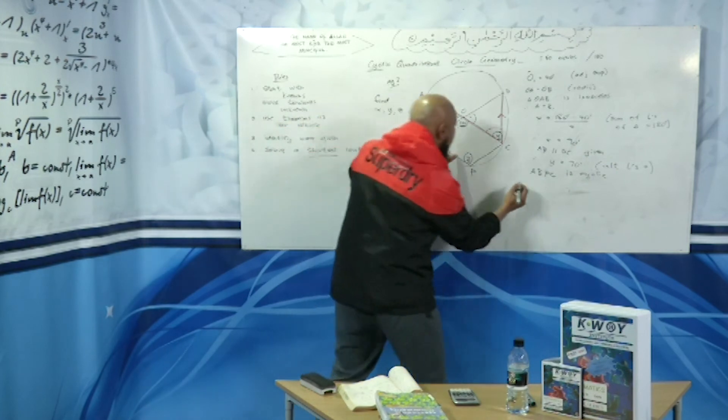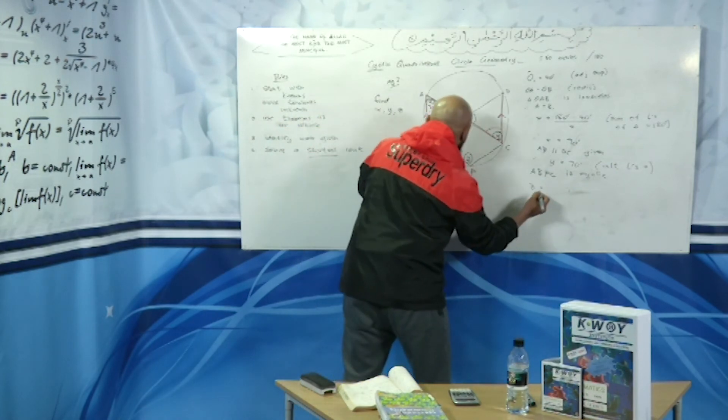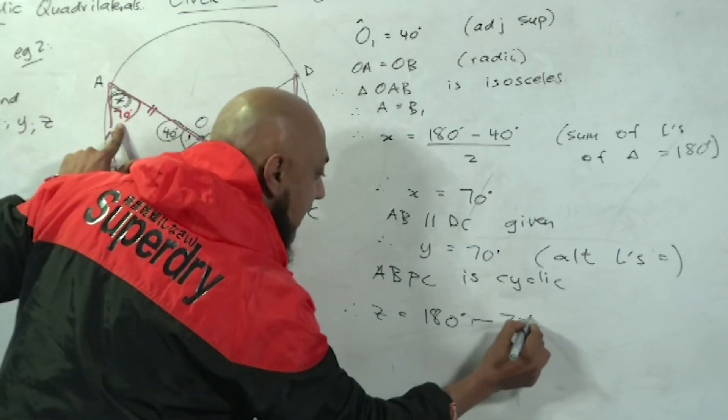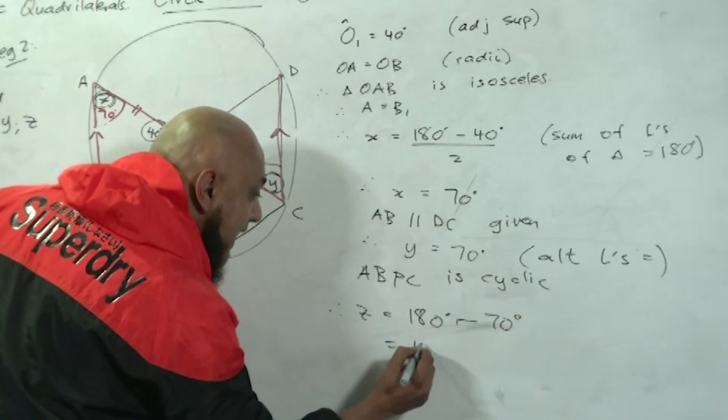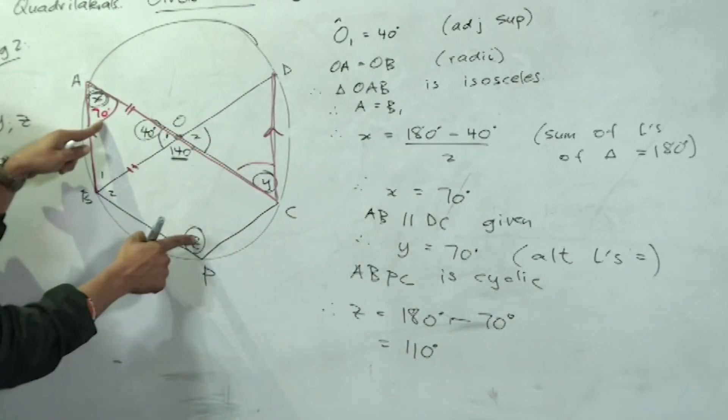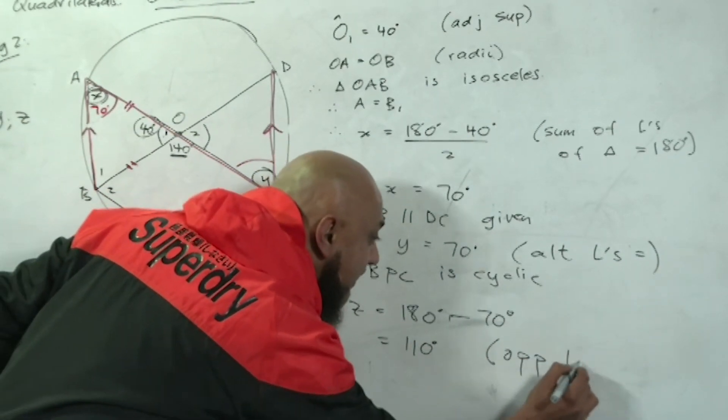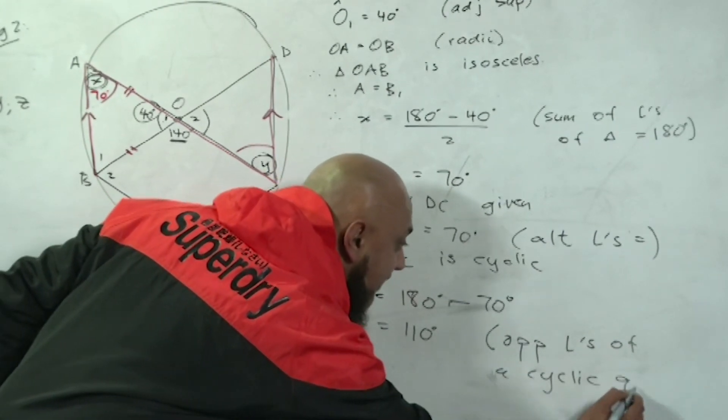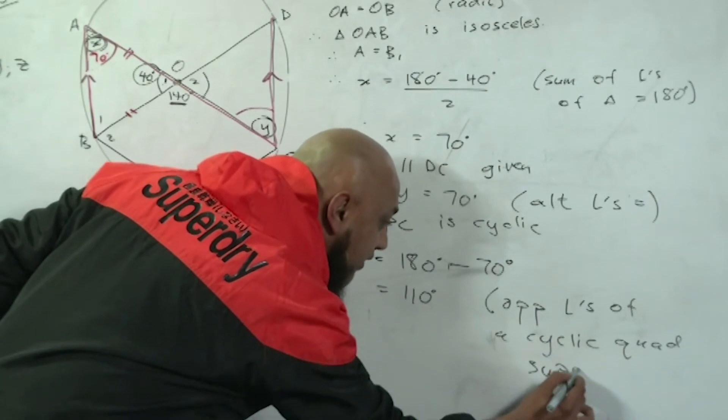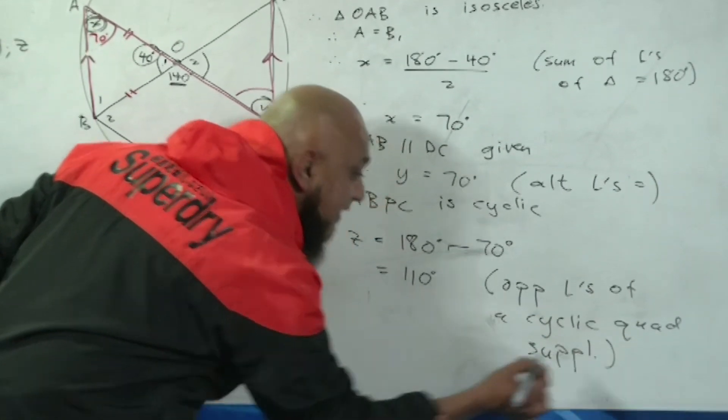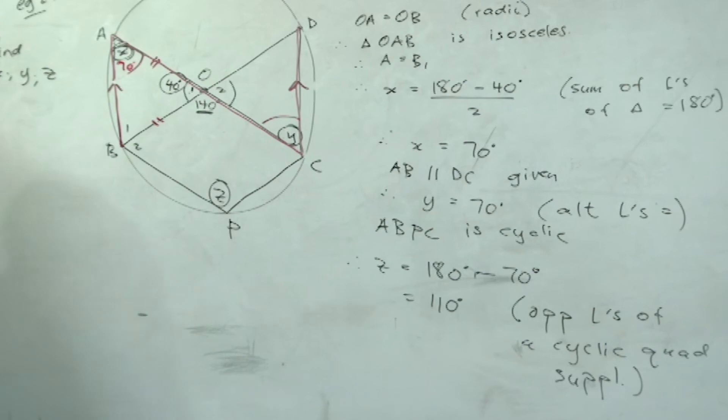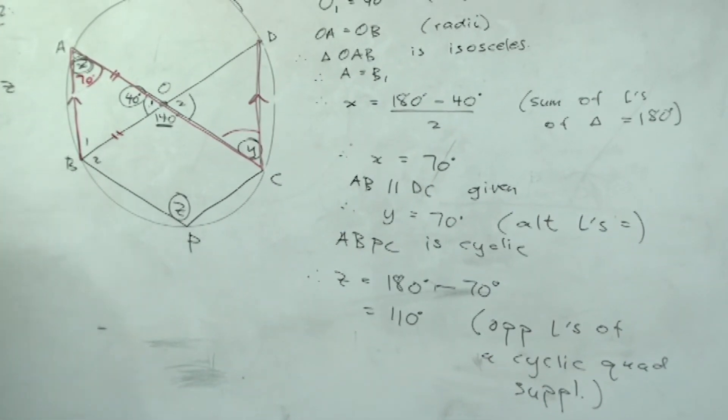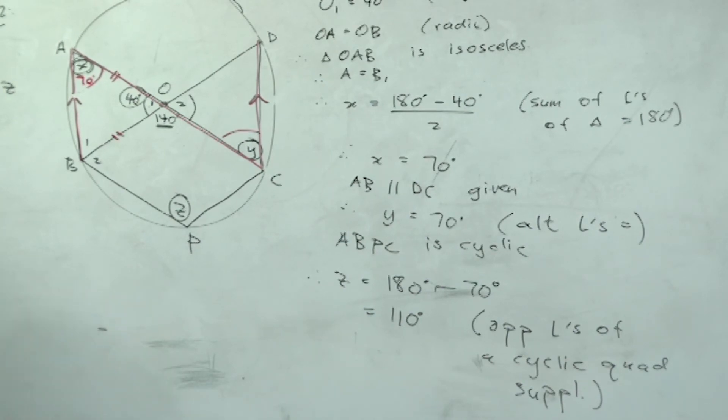Yes, you are right. They are supplementary. Therefore, angle z is equal to 180 minus 70, and 180 minus 70 is 110 degrees. Why did you say that? Because the opposite angles of a cyclic quadrilateral are supplementary. They are not equal, they are supplementary. Supplementary means that they add up to 180 degrees. So guys, I hope you took down all these reasonings.